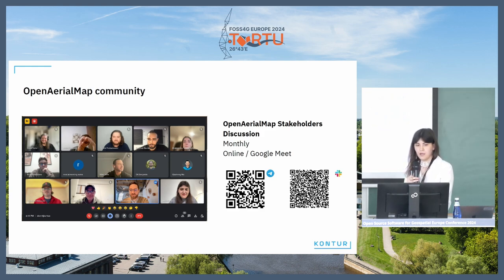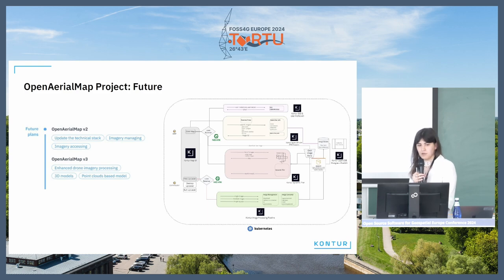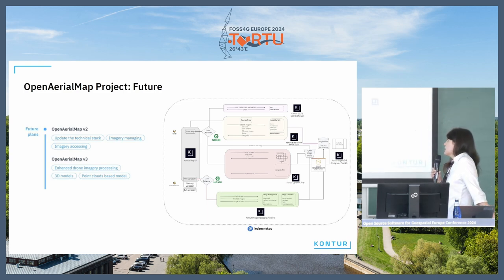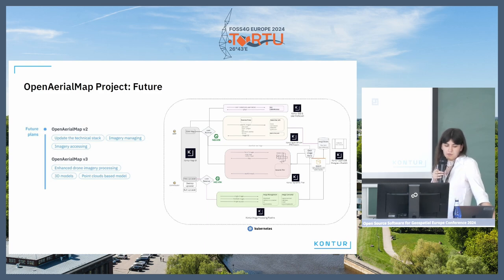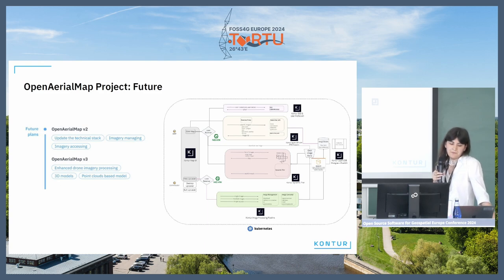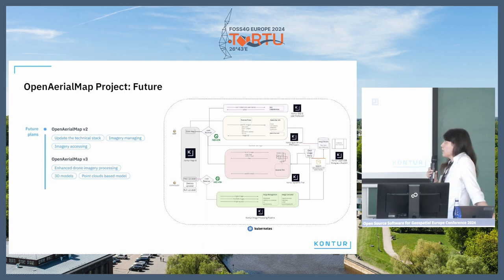Around the project we have some future plans and some pain points — for example, automatic uploading, as the project does not support STAC yet. We also want to enhance image search, improve UX, and redevelop the technical stack. We also have plans to develop Open Aerial Map version 3, which would support 3D models and point cloud-based models.